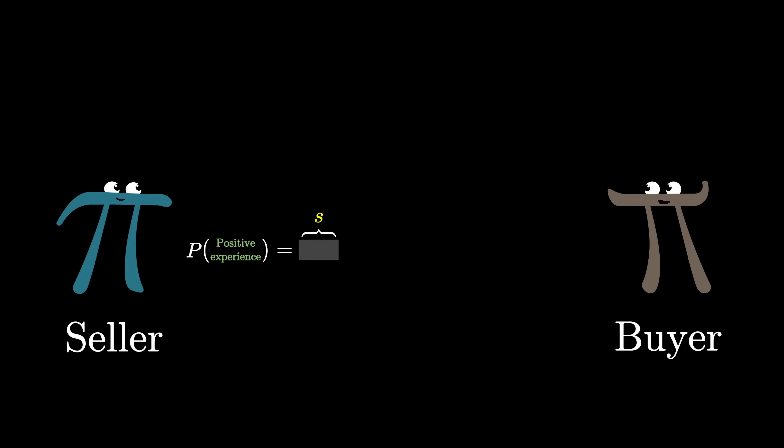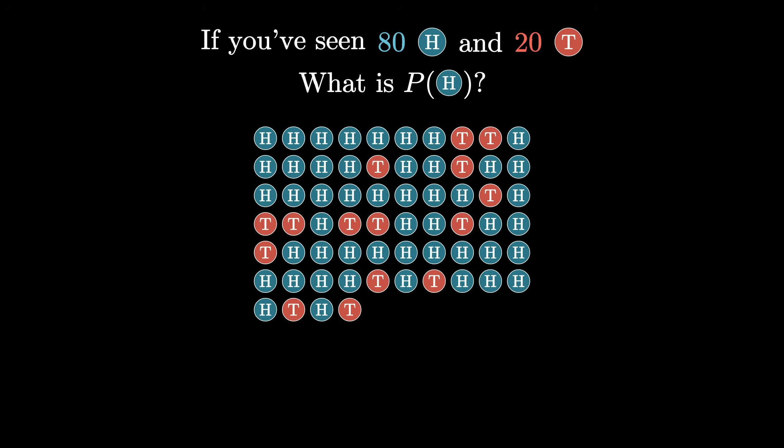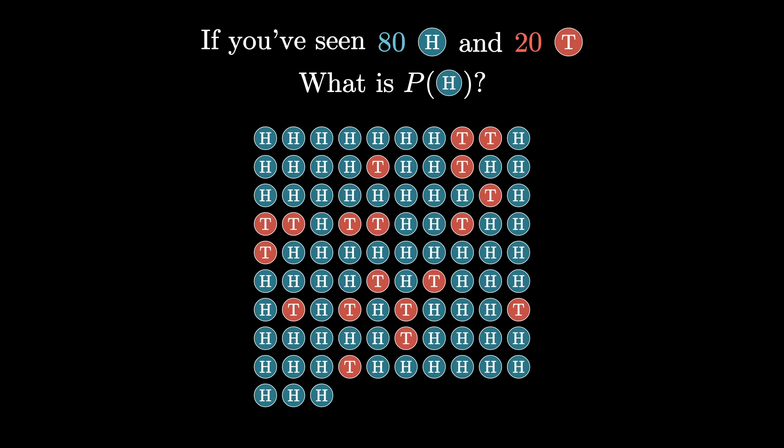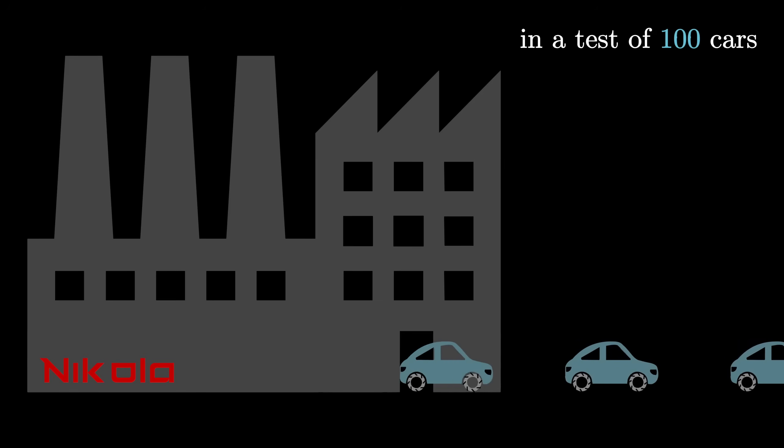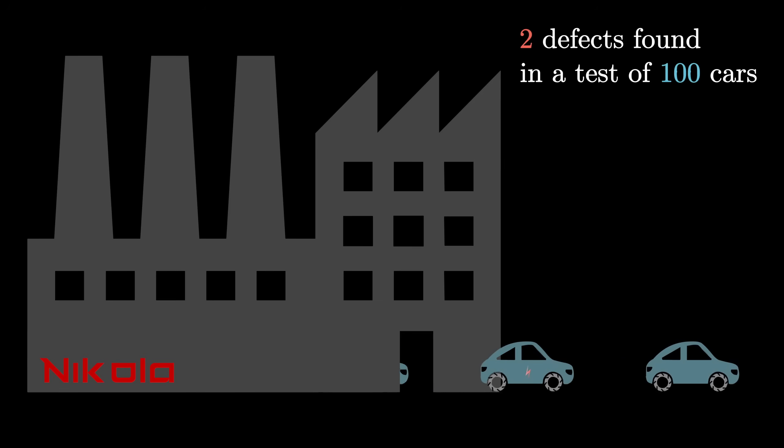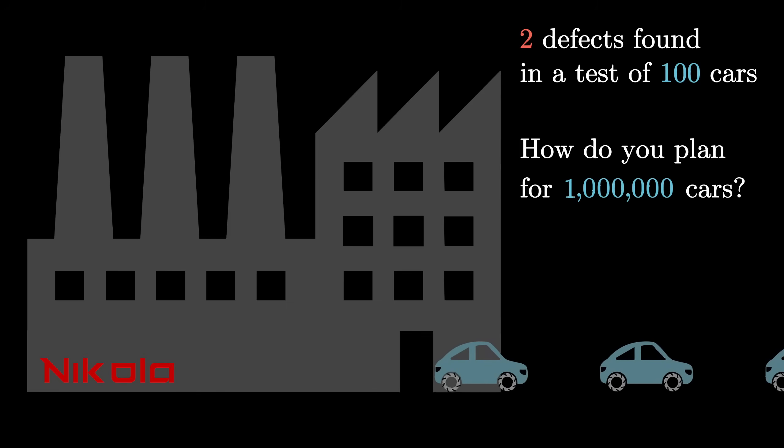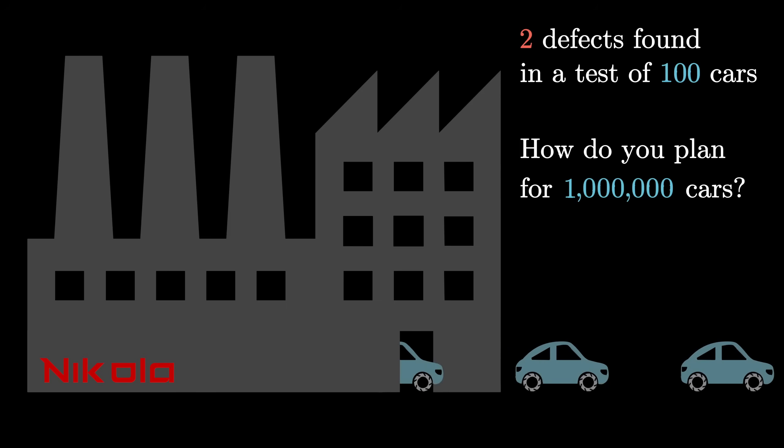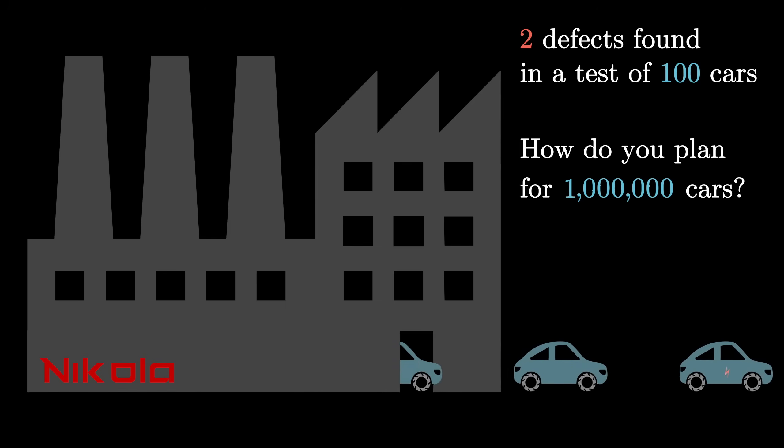I should also emphasize that this kind of setup is relevant to many situations in the real world where you need to make a judgment about a random process from limited data. For example, let's say you're setting up a factory producing cars, and in an initial test of 100 cars, two of them come out with some kind of problem. If you plan to spin things up to produce a million cars, what are you willing to confidently say about how many total cars will have problems that need addressing? It's not like the test guarantees that the true error rate is 2%, but what exactly does it say?